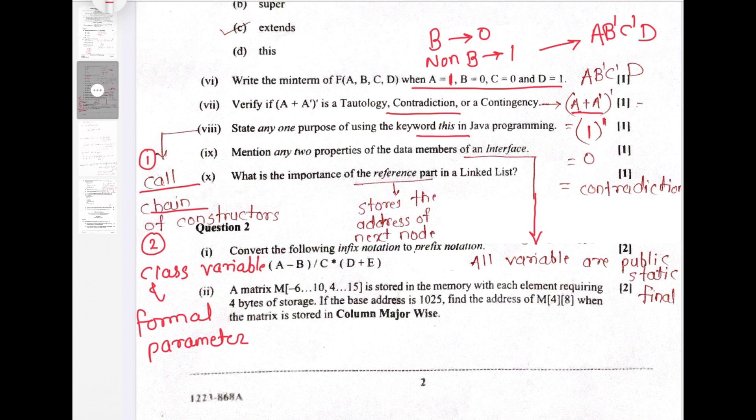Question number 9. Mention any two properties of data member of an interface. Data member means variables. What are the properties of variables of an interface? All the variables are public. They must be static and they must be final.